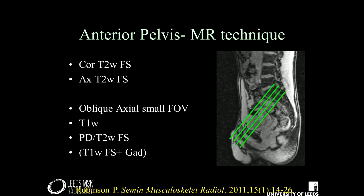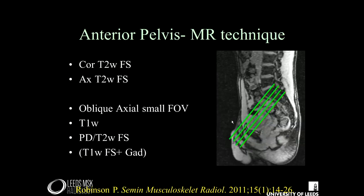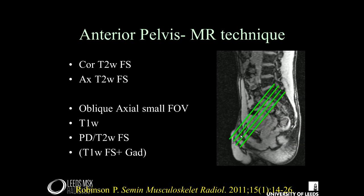What's the best way to image this area? You can use typical anatomical planes, but over the years a number of institutions, including our own, have looked at high-resolution, small field of view, angled images through the anterior pelvis. Given the anterior tilt, we go in the orthogonal plane to it. Other institutions have done slightly more coronal oblique, but we go for axial oblique with a small field of view. We typically do T1-weighted, PD, and T2-weighted fat sat. We no longer do gadolinium — with improvement in coils and magnet technology, you don't need gadolinium any longer.